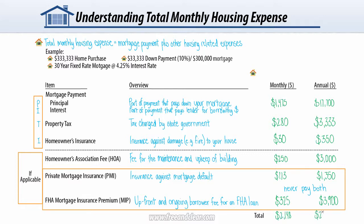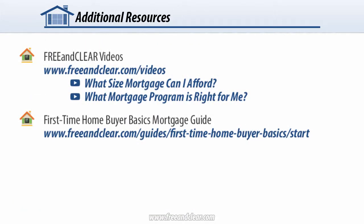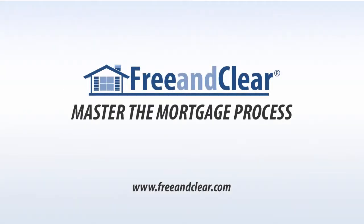To summarize, borrowers almost always have to pay Principal, Interest, Taxes, and Insurance — or PITI — and may be required to pay additional costs such as HOA fees, private mortgage insurance (PMI), or the FHA Mortgage Insurance Premium (MIP). Now that you understand total monthly housing expense, you can select the mortgage size and program that is right for you. We encourage you to review related FreeAndClear.com videos, such as 'What size mortgage can I afford?' and 'What mortgage program is right for me?', and check out the First Time Home Buyer Basics Guide on FreeAndClear.com.